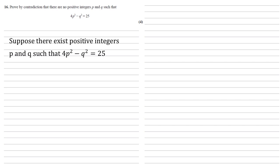Now the left hand side of our equation is the difference of two squares, so let's separate that out. We'll get (2p - q)(2p + q) = 25. Now because we're assuming p and q are positive integers, this means our two brackets must also be integers.